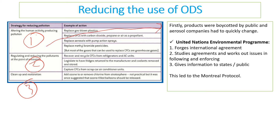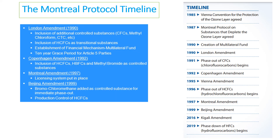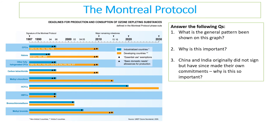The public quickly boycotted CFC products — people saw the problem and refused to use deodorant cans containing CFCs, so companies had to adapt and change. The United Nations Environment Programme drove international agreements called the Montreal Protocol, enforcing laws and providing public information. Even if countries didn't fully want to follow it, public pressure made them do so. The Montreal Protocol has several stages, with gradually more levels of control introduced over time, starting with CFCs — the most damaging — then moving to HCFCs.